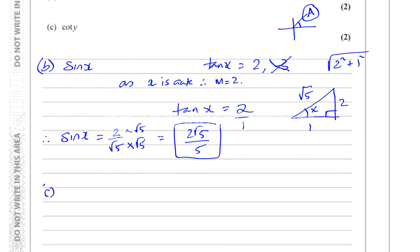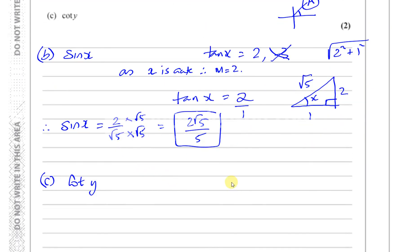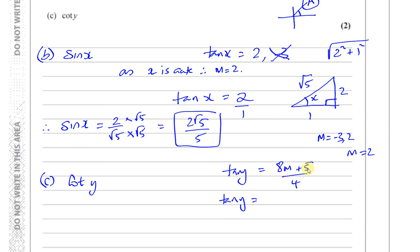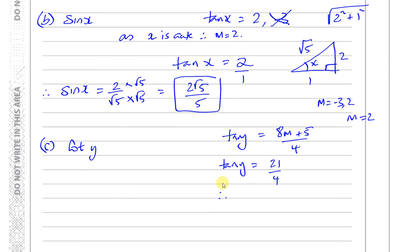Part c asks for cot Y. We know tan Y equals 8M plus 5 over 4. The values of M can be minus 3 or 2. If M is minus 3, then tan Y would be negative and Y wouldn't be acute. So again M must be 2. Therefore tan Y equals 16 plus 5 over 4, which is 21 over 4. The cotangent is the reciprocal of the tangent, so cotangent Y equals 4 over 21.